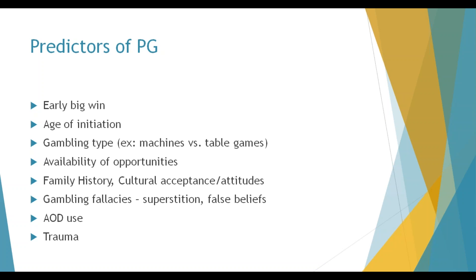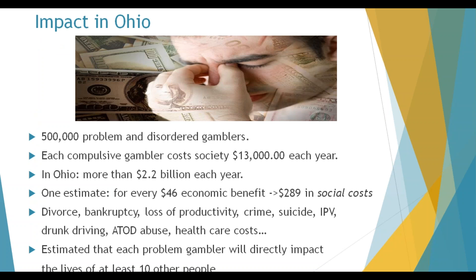Ohio has over 500,000 problem and disordered gamblers. Each problem gambler costs society about $13,000, which in Ohio amounts to $2.2 billion each year. One estimate is that for every $46 of economic benefit there are $289 in social costs — including divorce, bankruptcy, loss of productivity, crime, suicide, intimate partner violence, drunk driving, and additional healthcare costs. It's estimated that each problem gambler will directly impact the lives of at least 10 other people — generally family, friends, and employers.